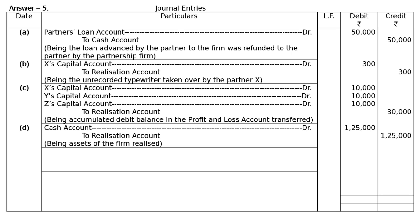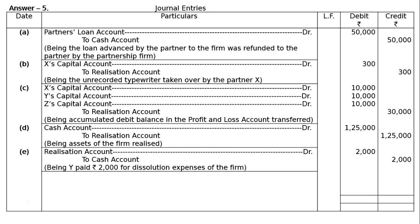Part E: Y, who undertakes to carry out the dissolution proceedings, is paid rupees 2,000 for the same. Realization account debited to cash account — being Y paid rupees 2,000 for dissolution expenses of the firm. Note: Y here may not be a partner, or if Y is a partner, the payment is treated like an ordinary expense.